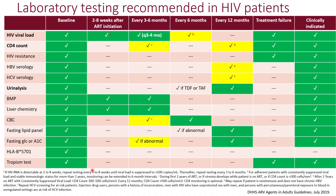Let's take a look at monitoring parameters for HIV. On this table, green indicates a laboratory parameter needed for everyone, and yellow indicates parameters that may be needed for some patients.